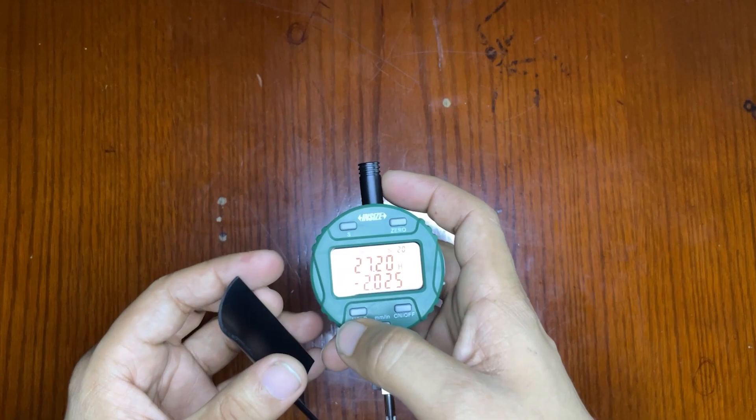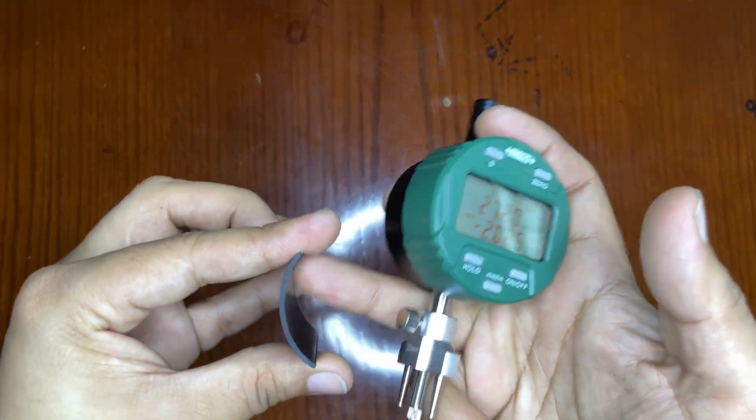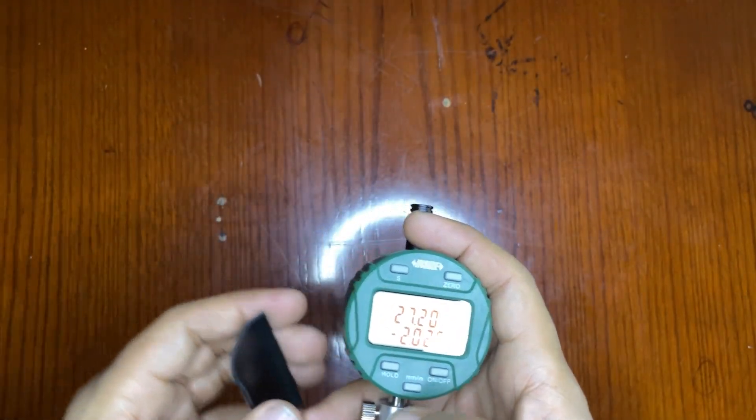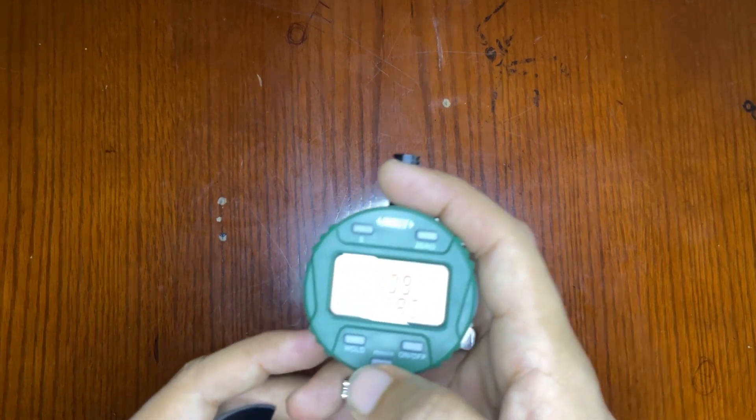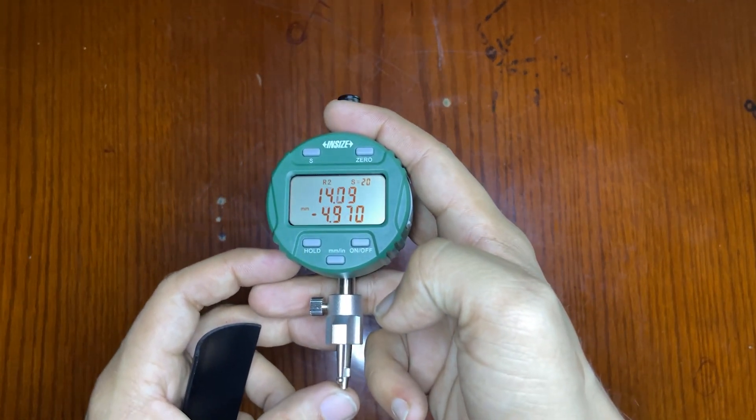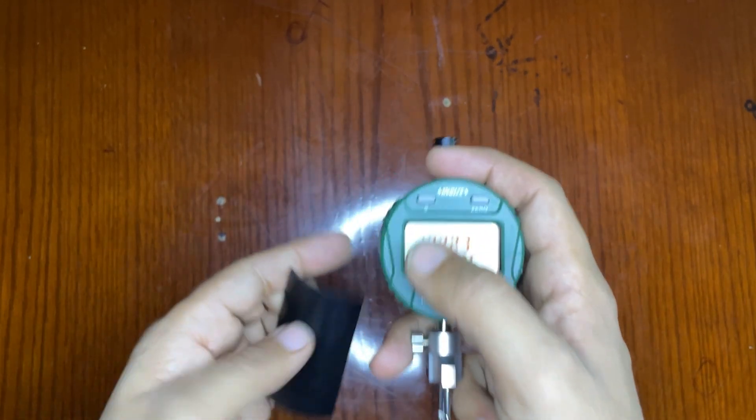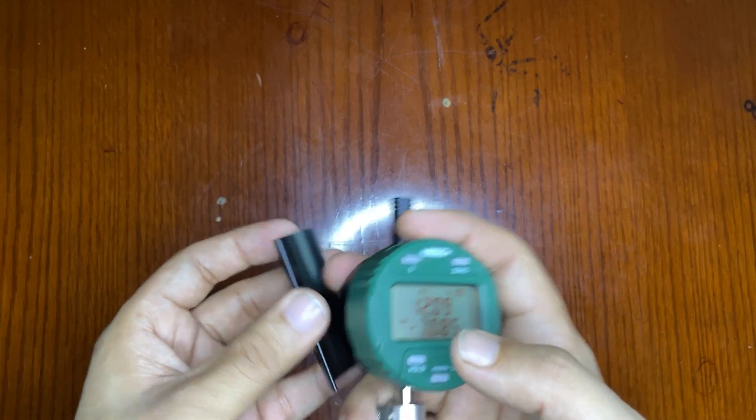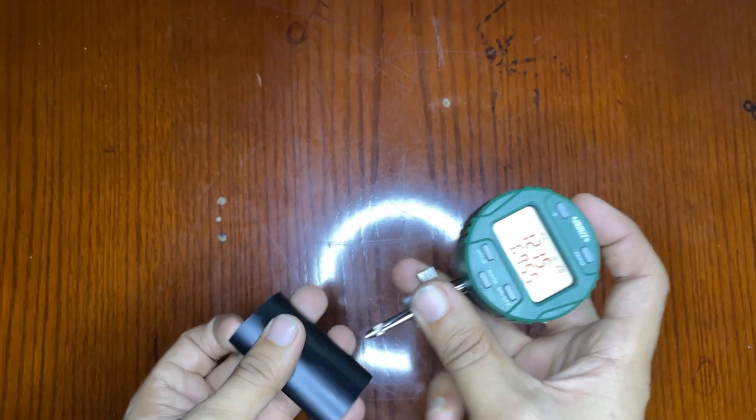Now you can see there's R2 and R1. R2 denotes the inside radius. And you can see if I press the probe further, it shows R1, which will be the outside radius. So this is R2 and this is R1.